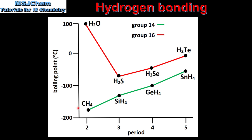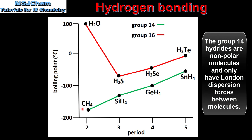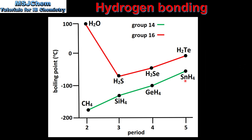Next we look at the trend in boiling point for the Group 14 hydrides, starting with methane, which is a non-polar molecule and only has weak London dispersion forces. As we go from CH₄ to SnH₄, the boiling point increases due to the increase in molar mass and the stronger London dispersion forces between the molecules.